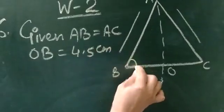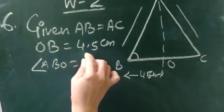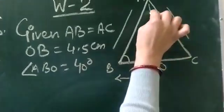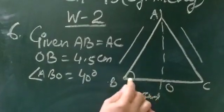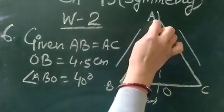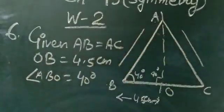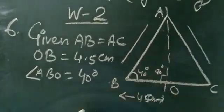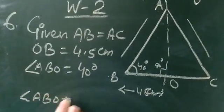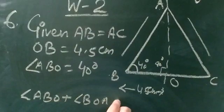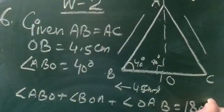You are given angle ABO which is 40 degrees. If we consider triangle ABO, we know angle B is 40 degrees and angle AOB is 90 degrees, so we can easily calculate angle BAO. We write: sum of three angles equals 180 degrees. So angle ABO plus angle BOA plus angle OAB equals 180 degrees.